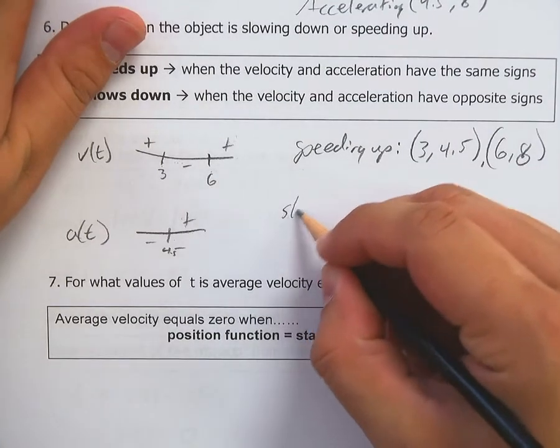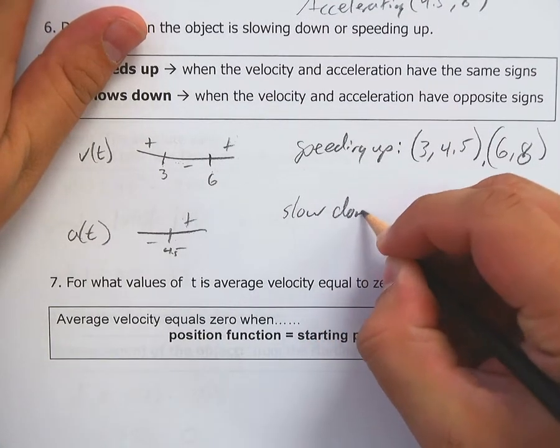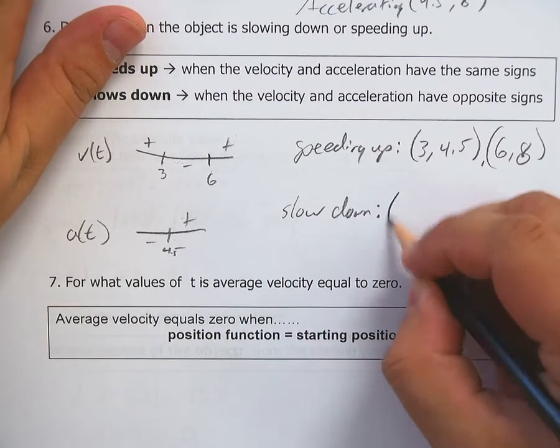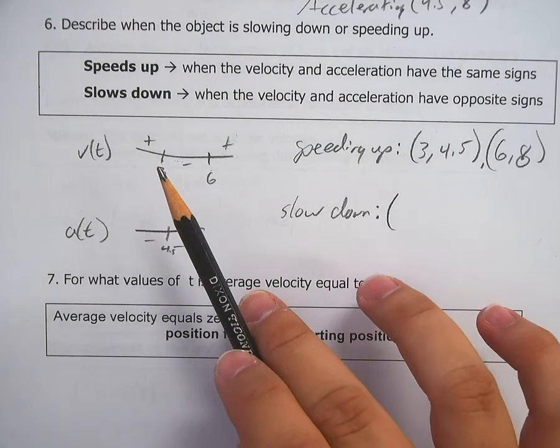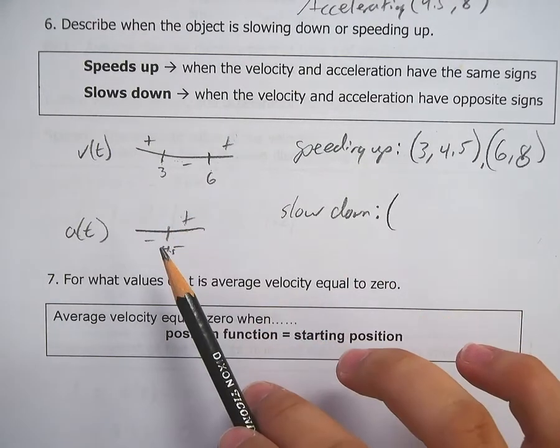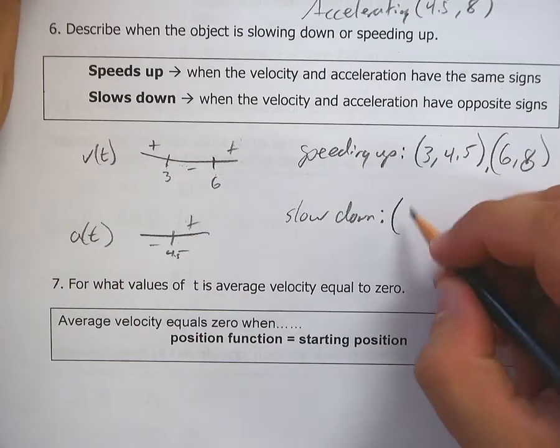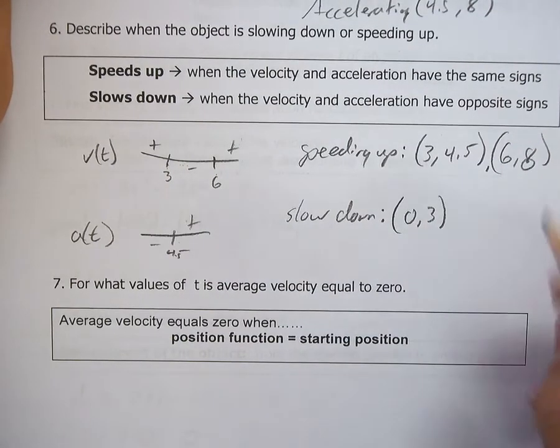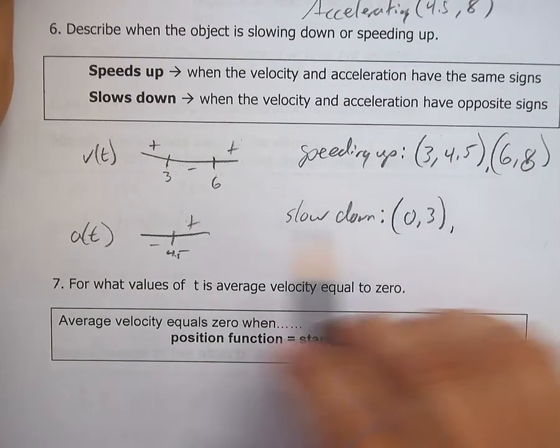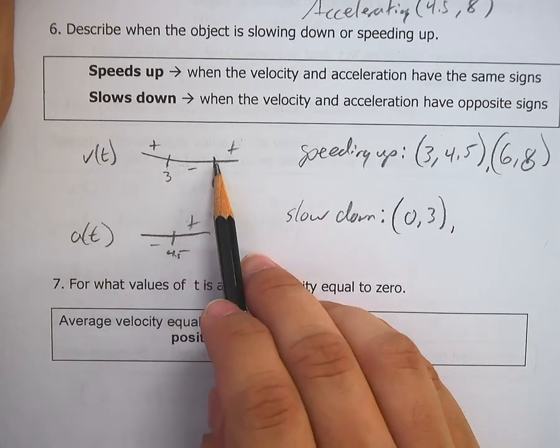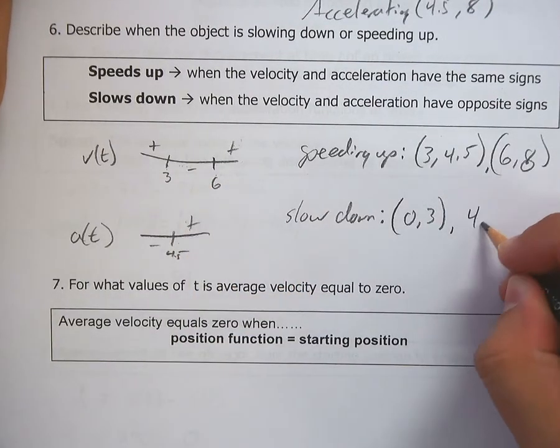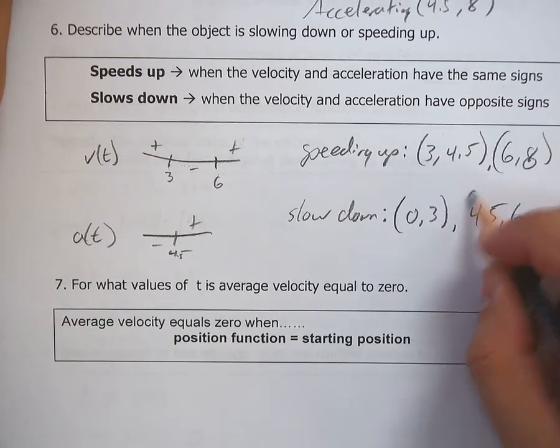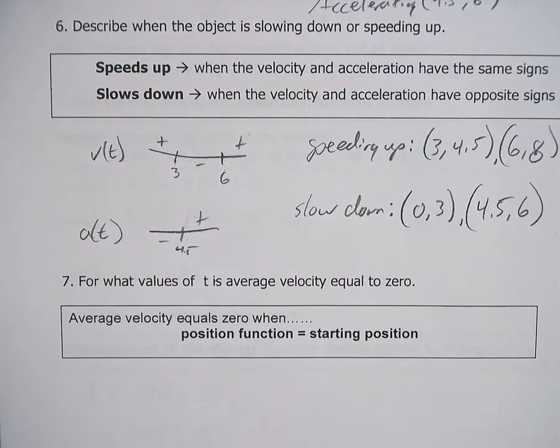All right. And then slowing down here. Anywhere that they have opposite signs. So from zero to three, velocity is positive and acceleration is negative. So it'll go from zero to three. And then between 4.5 and six, velocity is negative and acceleration is positive. So 4.5 to six. So just a little bit of sign analysis for you.